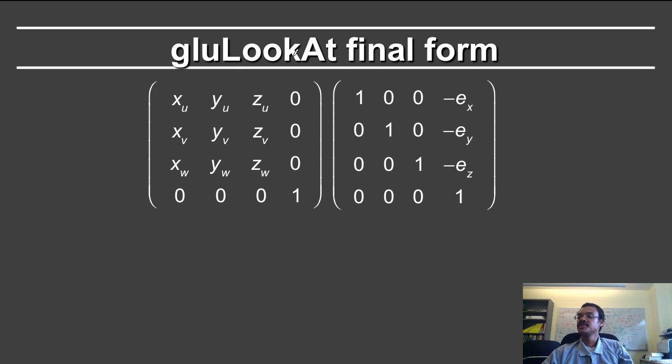And you notice here, I'm going to have xu times minus ex, yu times minus ey, and zu times minus ez. This just corresponds to a dot product of the vector u and the vector e, of course with the negative. And therefore, these things will become minus u dot e, minus v dot e and minus w dot e.